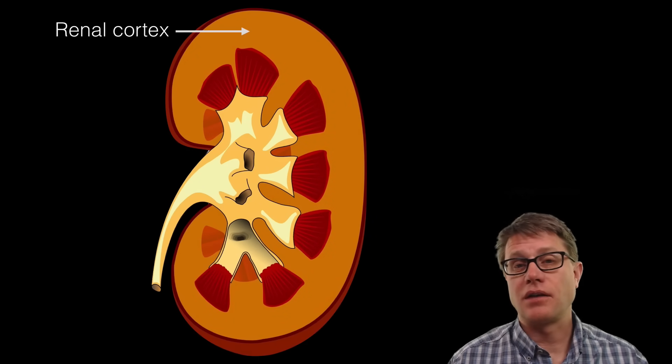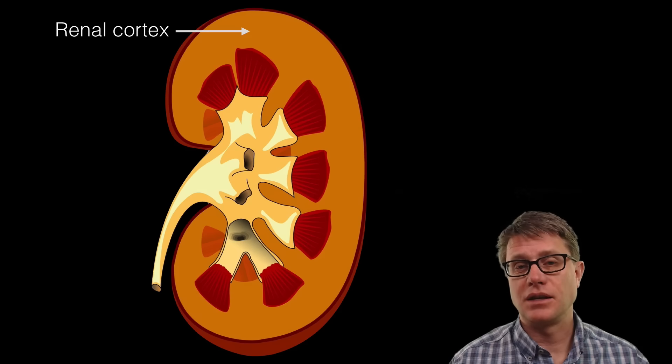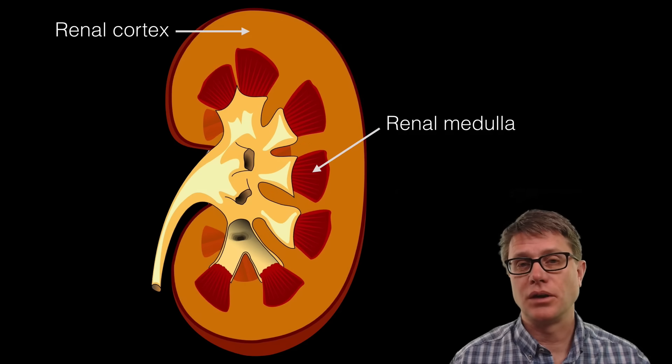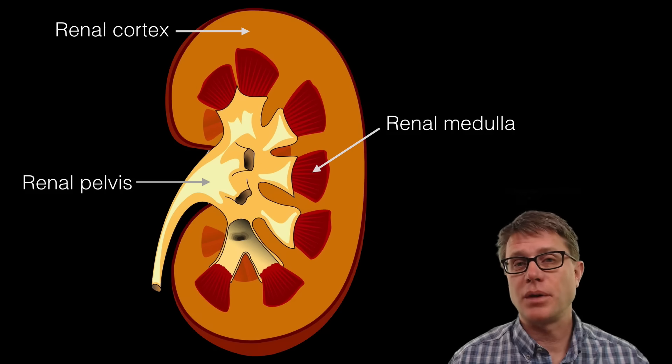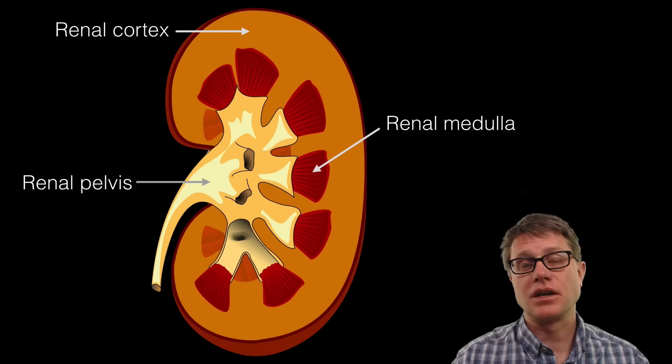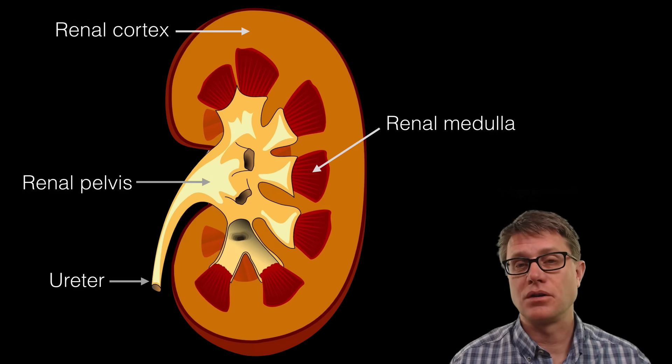If we look at the structure of the kidney, on the outside we have the renal cortex. Renal simply means kidney. On the inside we have the renal medulla, and at the center we have the renal pelvis. This is a hollow opening where all the nephrons enter into, get rid of their urine, and that eventually goes through the ureter.